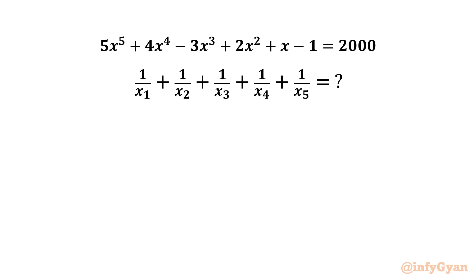The quintic equation is 5x to the power 5 plus 4x to the power 4 minus 3x cubed plus 2x squared plus x minus 1, equal to 2000. Here x1, x2, x3, x4, and x5 are the roots of this quintic equation.